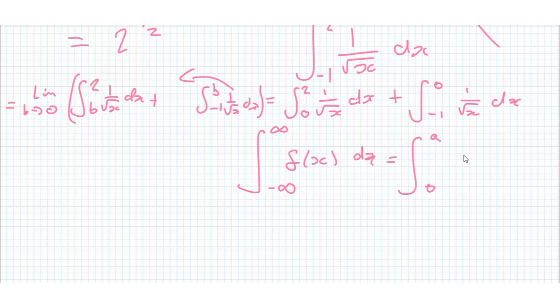a to 0 of f of x dx plus 0 to b of f of x dx, and then obviously send a to infinity and b to minus infinity and just check it like that.